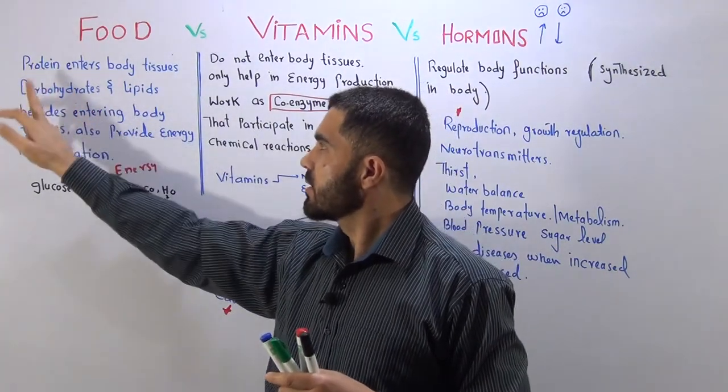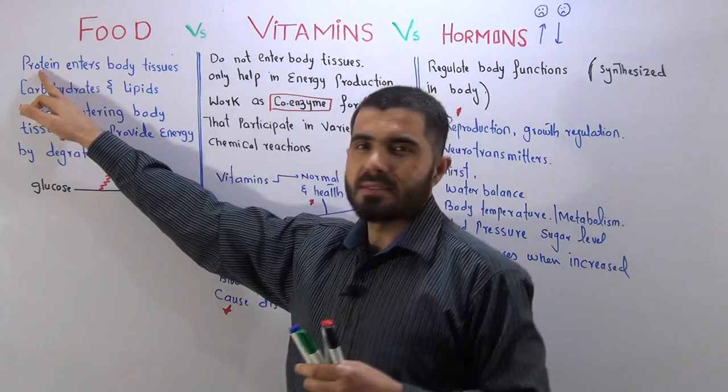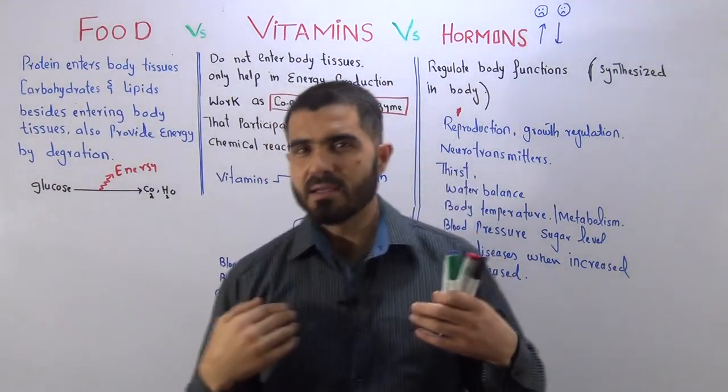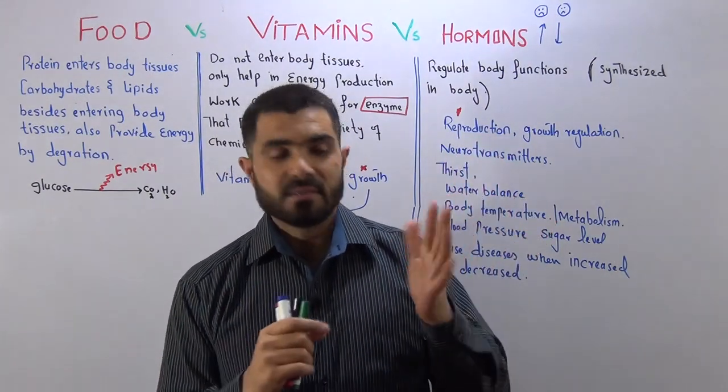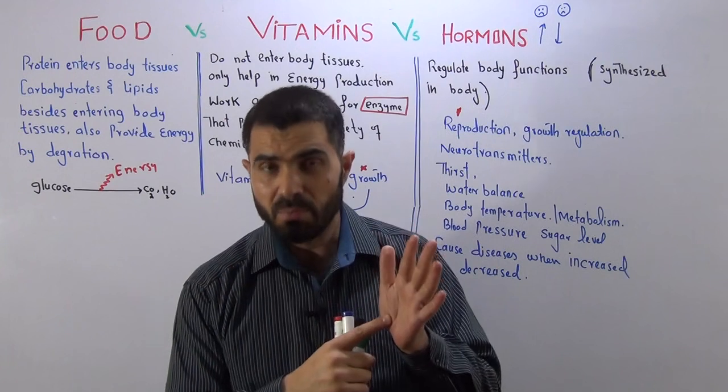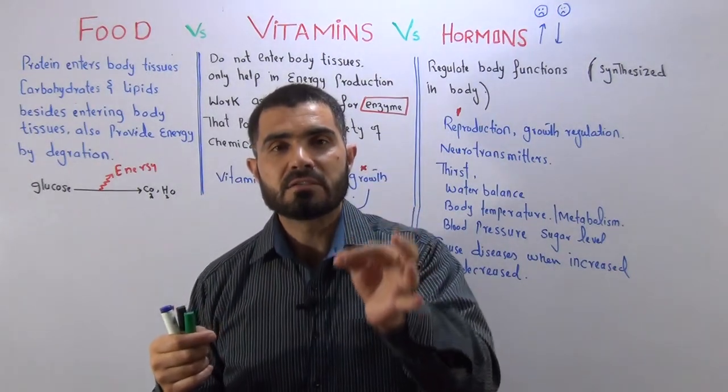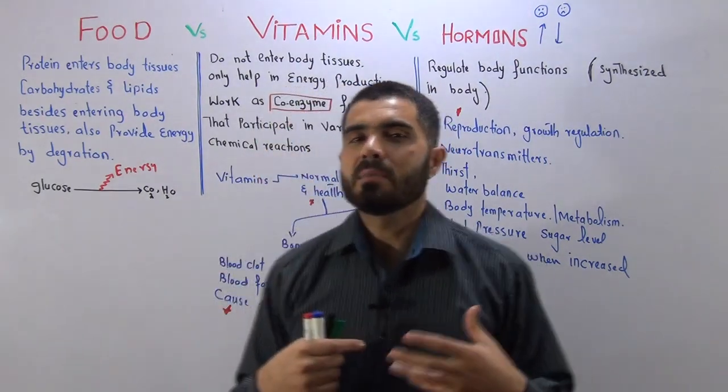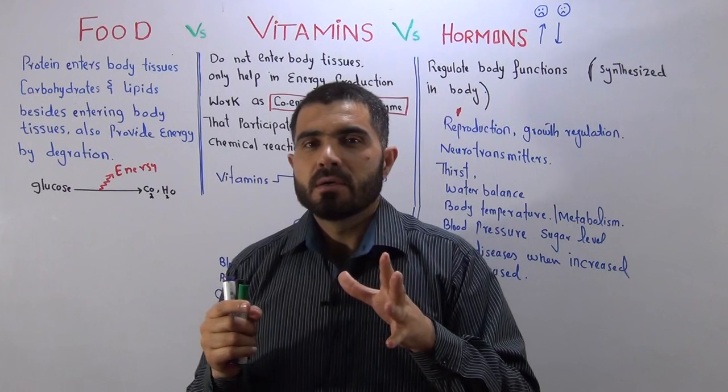That is actually protein, carbohydrate, and lipids. Three things. Protein enters our body tissue. If you focus on your body, you will realize that each and every part of the body consists of tissues. Protein is the part of your tissue, not only protein but also carbohydrate and lipids. If you check your skin, your skin consists of protein, your hair consists of protein, your nail consists of protein.